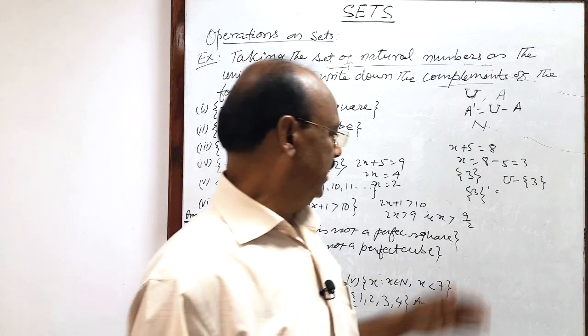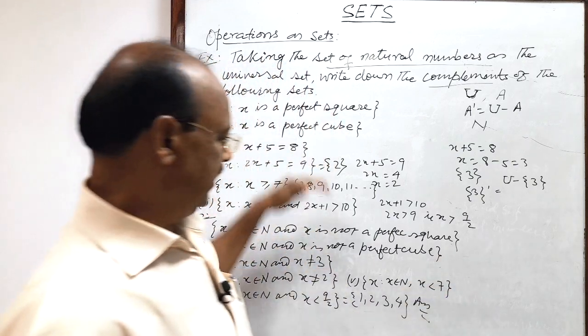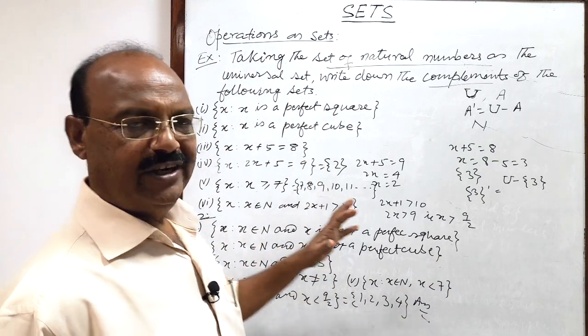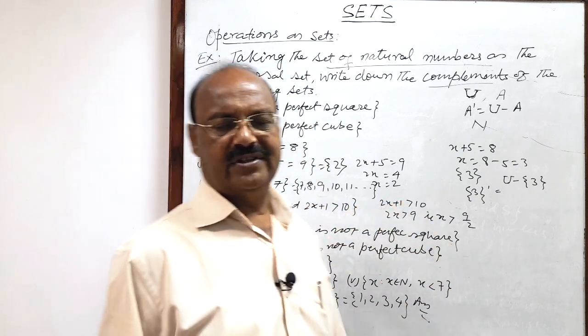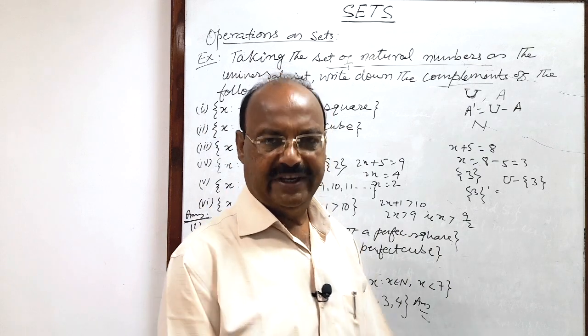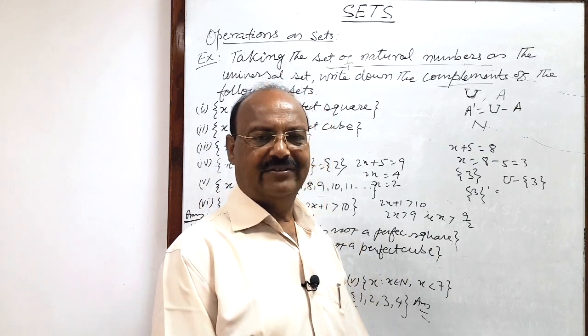These are very objective-type questions where only a one-line answer is required. If we understand how to get the complement of a given set — by removing the elements of set A from the universal set to get its complement — we can get these answers easily. Very interesting and very easy questions. Hope you have understood it very well. Thank you very much.